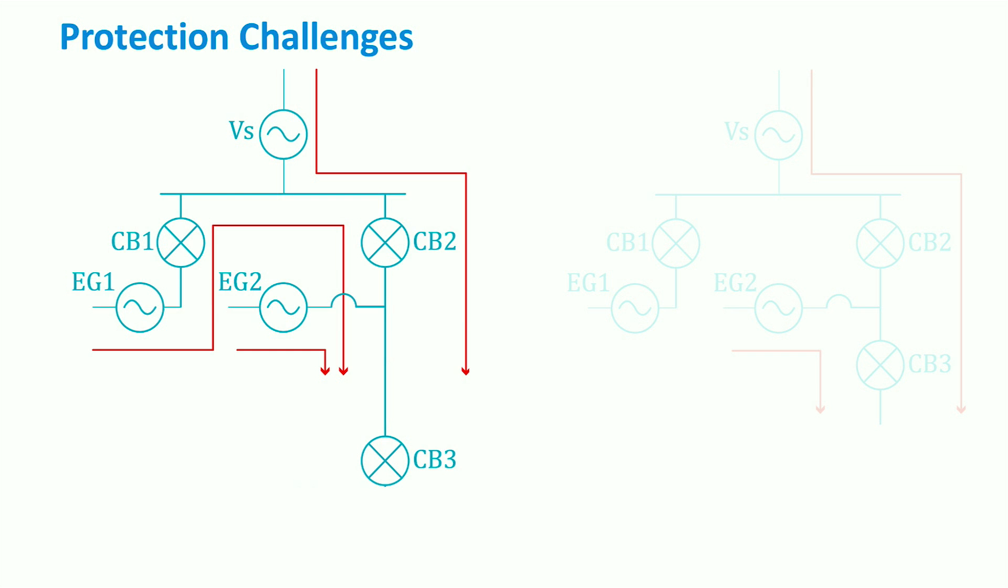In the figure, we see how connecting distributed generators on the side of the EEG feeder result in a bidirectional or reverse flow through circuit breaker 3, or CB3. If a non-bidirectional relay is installed at CB3, this would cause it not to trip during faults.